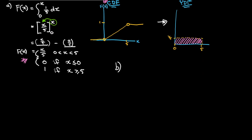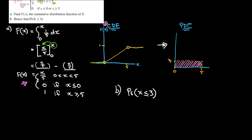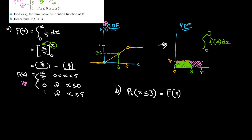For the second part of the question, find the probability that x is less than or equal to 3. We use our cumulative distribution function — we just evaluate 3 into the function. When we were using PDFs, we'd find x = 3 and evaluate the whole area from zero to three using an integral. But using the CDF, we dot x = 3 up and read off the y-value, which is going to be 0.6. That y-value is equivalent to the area under the PDF.